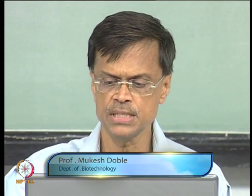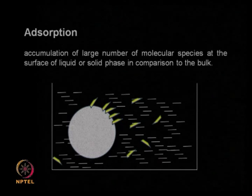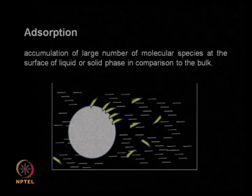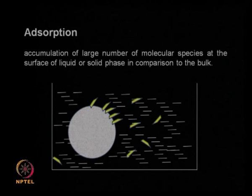We have been talking about adsorption and will continue on the same topic. As introduced in the previous class, adsorption is a surface phenomenon. A gas can get adsorbed on a solid surface, or even a solute in a liquid can get adsorbed on a solid surface. This is a surface phenomenon, unlike absorption, which is a bulk phenomenon — that is the main difference. In absorption, a liquid gets the solute completely dissolved into it, whereas in adsorption the solute gets adsorbed onto a solid surface.